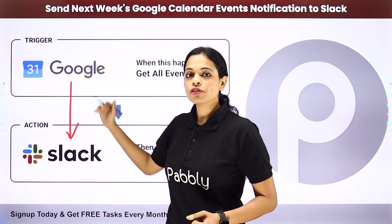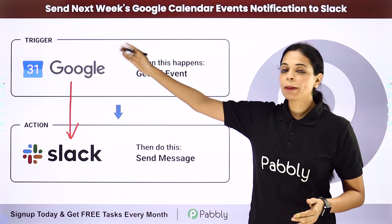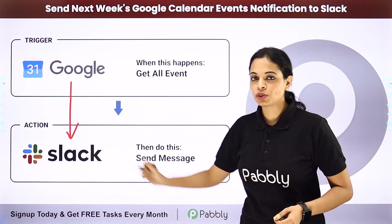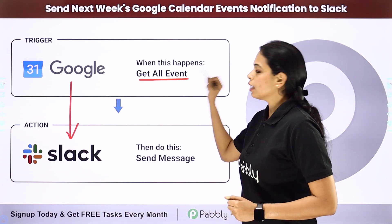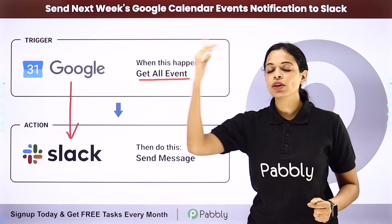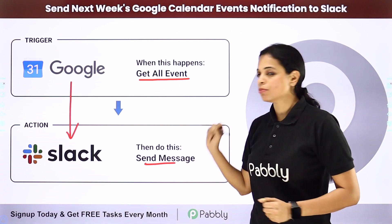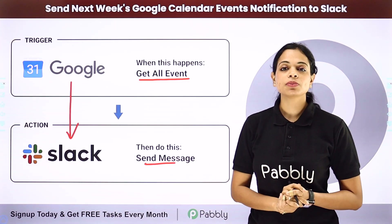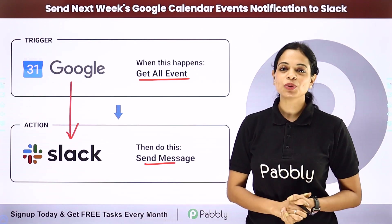How can this be done? I'm using Pabbly Connect software where our trigger application would be Google Calendar and our action application would be Slack. So the moment there is a particular event scheduled for the next week, automatically your team would receive a message. Let me take you to my screen to understand how to integrate and automate this entire process.